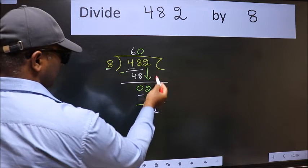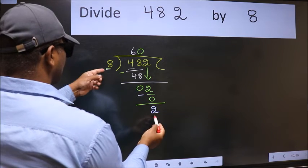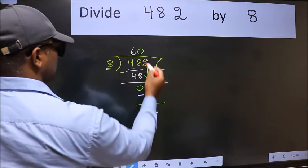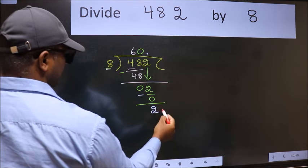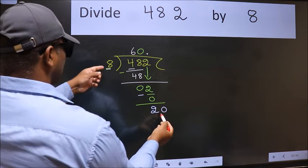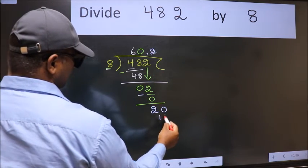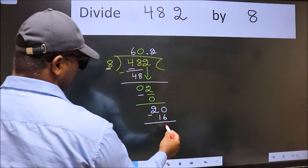Over here, we did not bring any number down, and 2 is smaller than 8, so 20. A number close to 20 in the 8 table is 8 times 2 is 16. Now we subtract. We get 4.